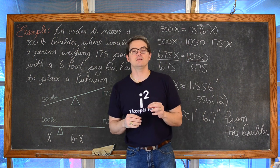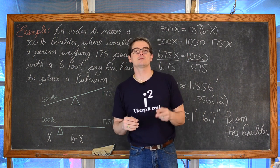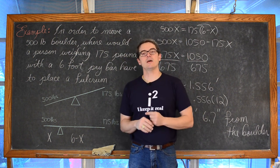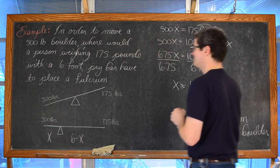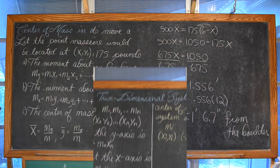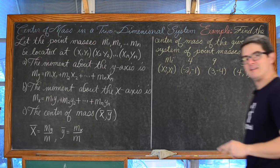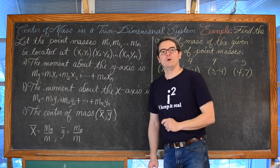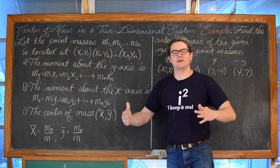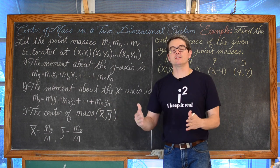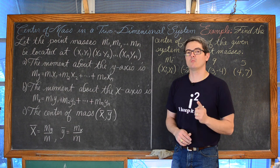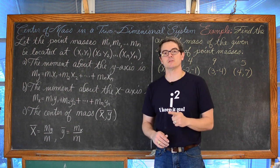Now let's talk about finding the center of mass in a two-dimensional system and do that last example. We've just done all this building of foundation and vocabulary for finding the center of mass in a one-dimensional system. Expanding that into a two-dimensional system is a very small step.